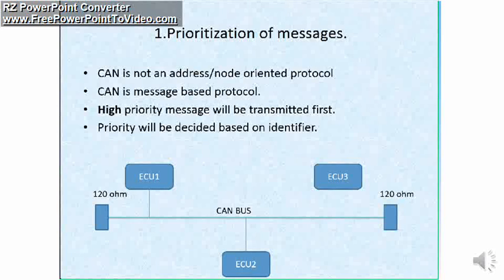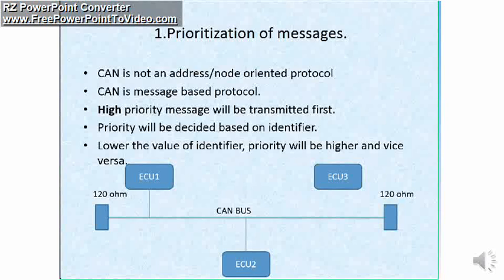Identifier does not indicate the destination of the message. Instead, it indicates the meaning and priority of the message. So lower the value of the identifier, higher is the priority. And higher the value of the identifier, the priority will be lower for that particular message.